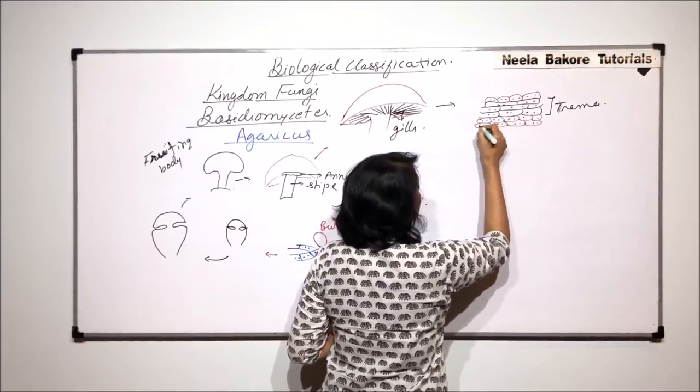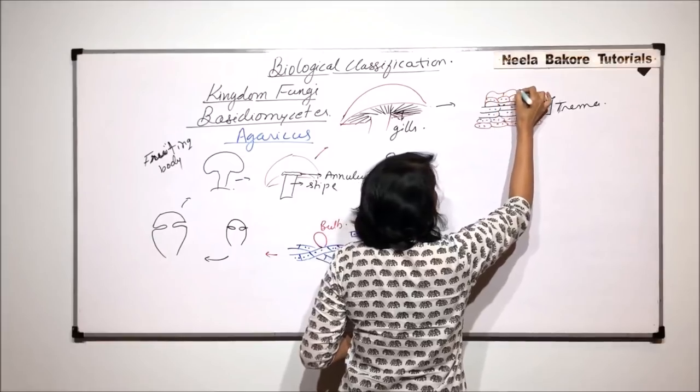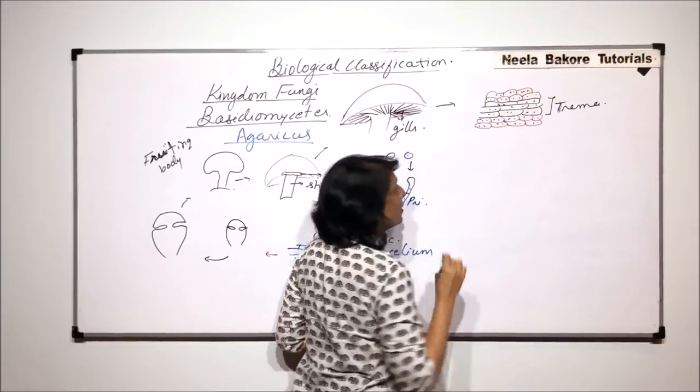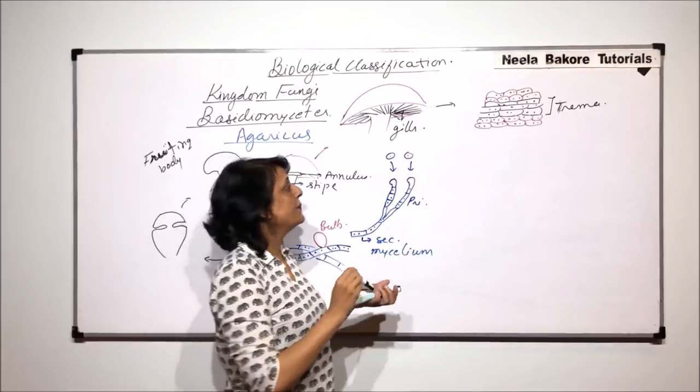The reproductive structures growing. We find these which are going to help in formation of the baesidia.